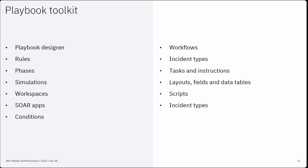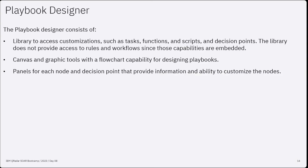Now that we looked at planning and approach for creating a playbook, you will need some tools. The playbook toolkit consists of customizations, objects, and other tools to help you build playbooks that meet your SOAR requirements. These include playbook designer, rules, phases, simulations, workspace, SOAR apps, incident types, scripts, layouts and fields, and tasks and instructions. The playbook designer is the next step in the evolution of playbook design — you can graphically design your conditions. It consists of a library to access customizations such as tasks, functions, and scripts; a canvas with flowchart capability; and panels for each node and decision point to provide information and customization.